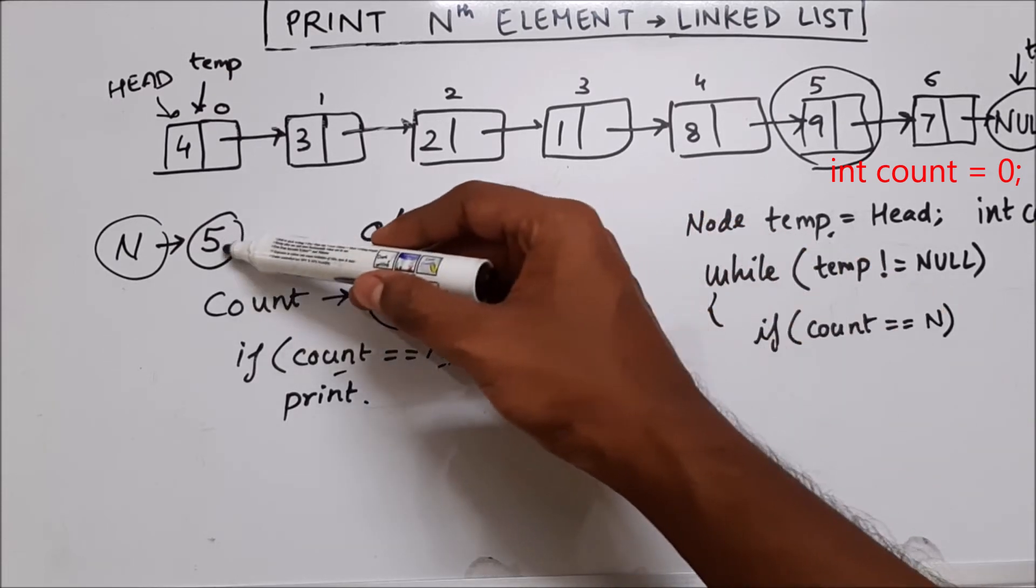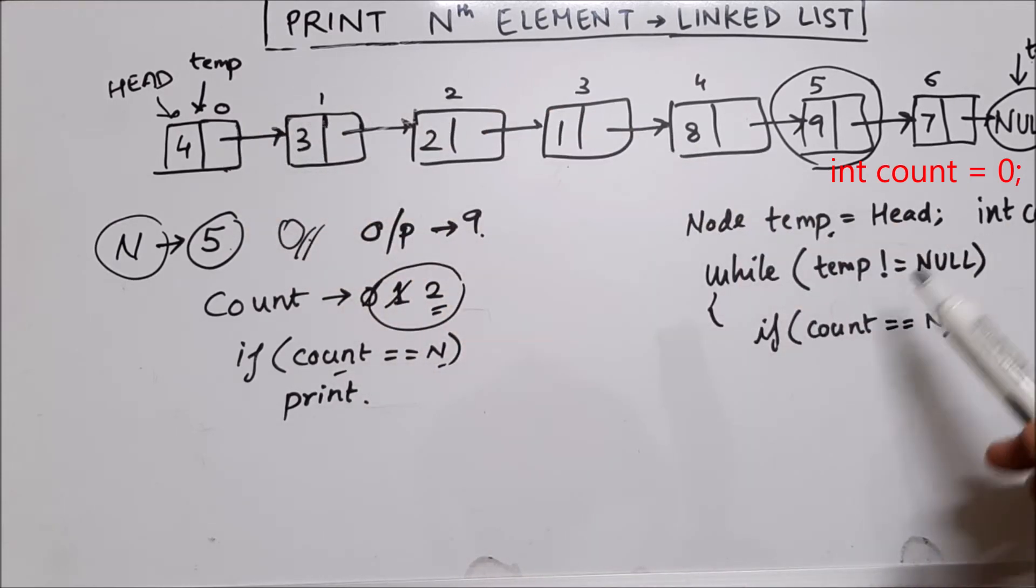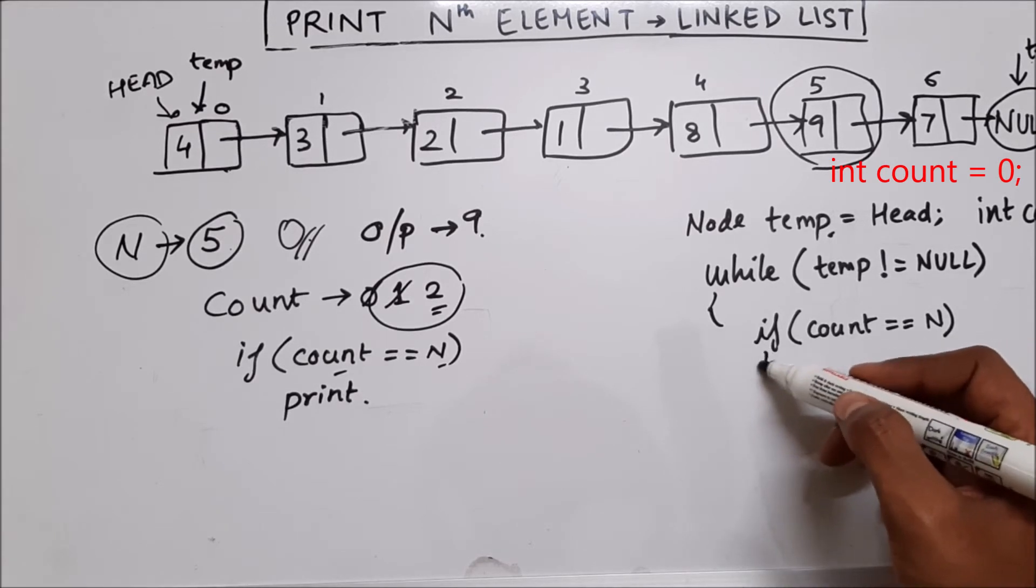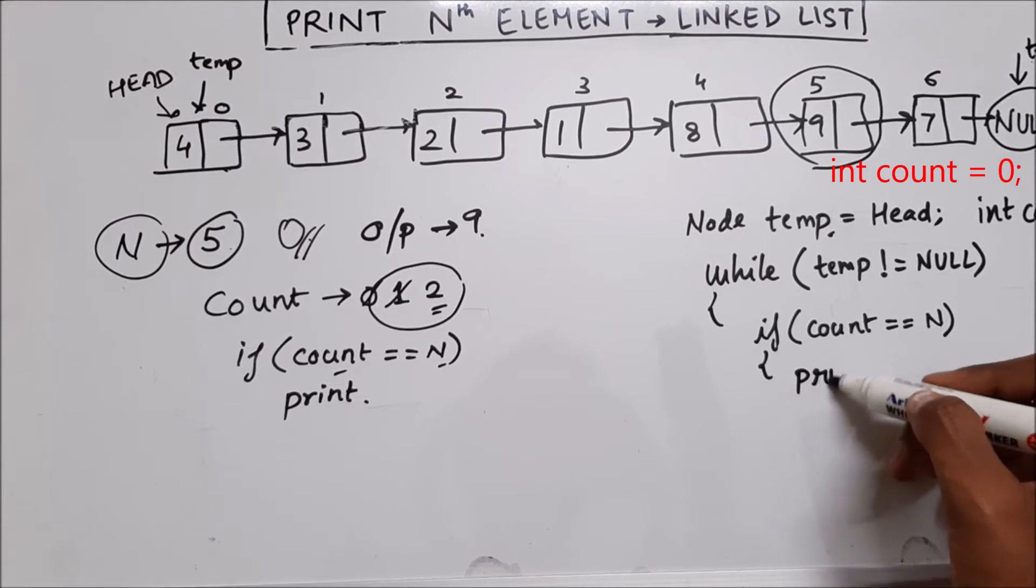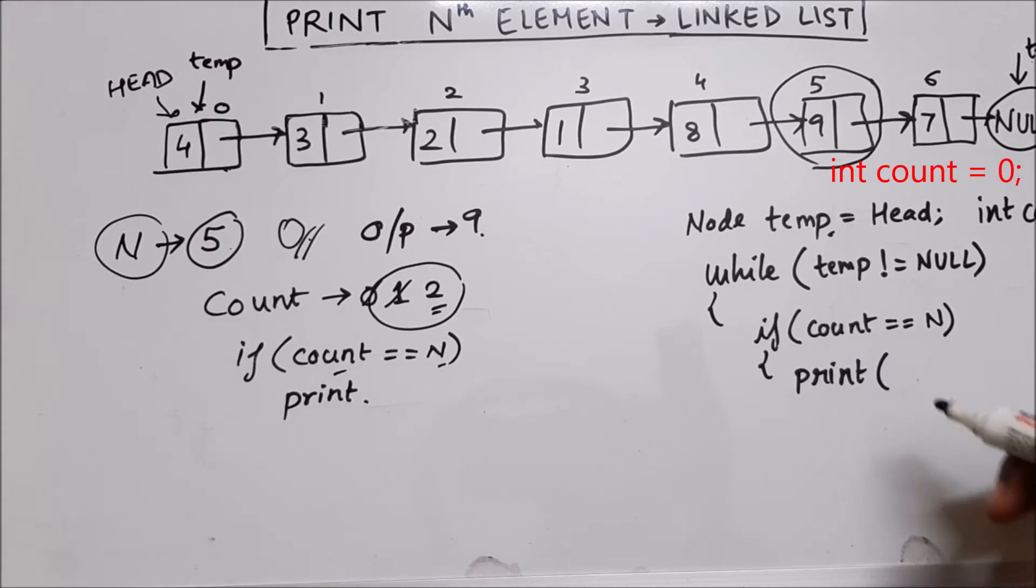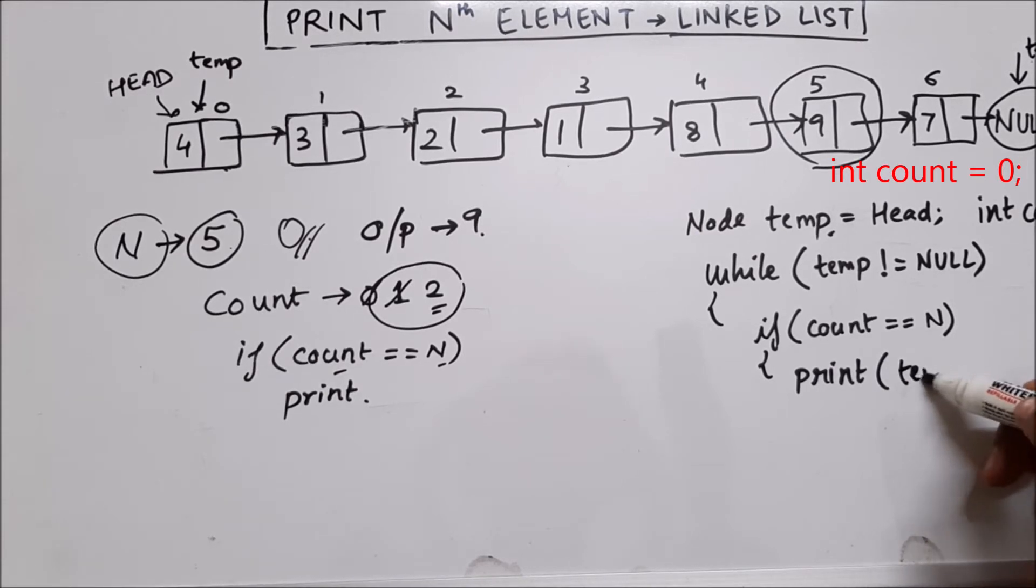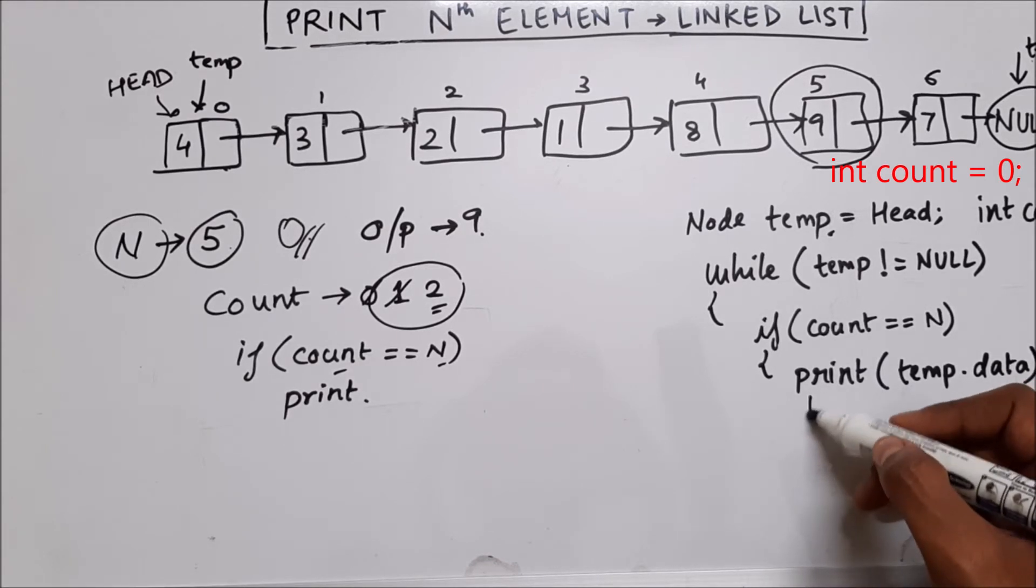Let's say n was given as zero, which means we have to print the value present at zeroth node. So here itself we will check and if it is equal, we are going to print it, right? We will print and break the loop. So I'll just write print instead of system.out.println. And here we will do is we will do temp, why temp, because temp is the node which is pointing to the linked list. So temp.data.